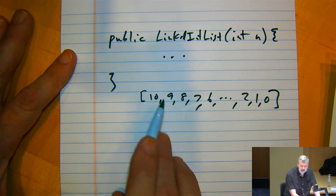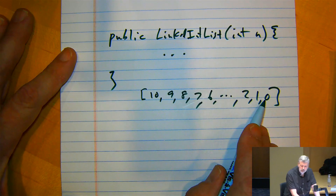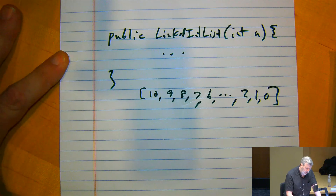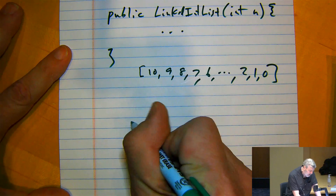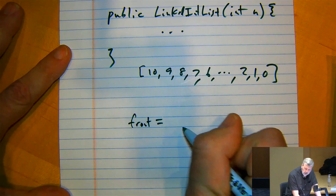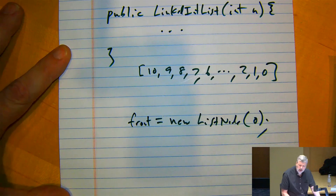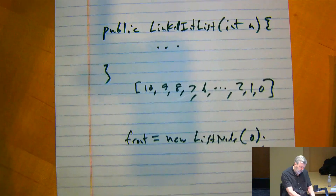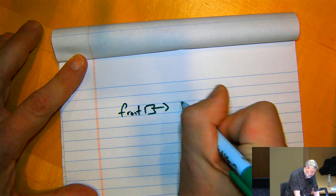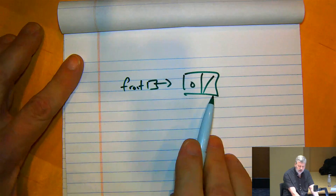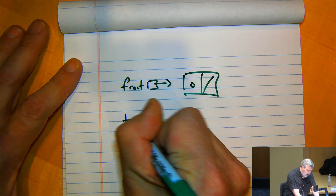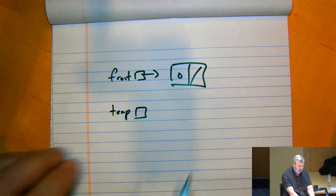Initially front would be null. To insert the zero, I set front to a new ListNode with zero in it — a one-element list. Then I'm in a situation where front points at a node with zero. I'm going to use a temp variable. Your assignment write-up says you're limited in how many nodes you can construct, and students often think that means they can't have temp variables — that's not true. Temp variables are not nodes.